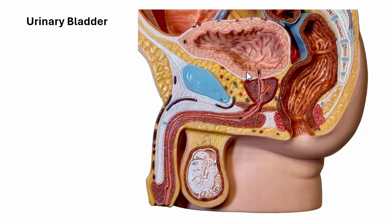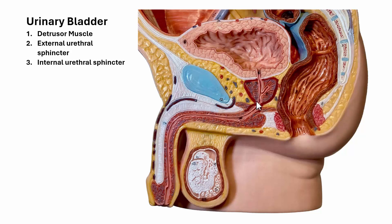In the detailed male model, here is the urinary bladder. This line represents the detrusor muscle, which helps push out urine during urination. Down here we have the external urethral sphincter, which is skeletal muscle and therefore under conscious control. Up above is the internal urethral sphincter, which is smooth muscle and involuntary. Once the bladder enlarges and pressure builds on the internal urethral sphincter, it relaxes and opens. We then have conscious control over the external urethral sphincter to allow urination.